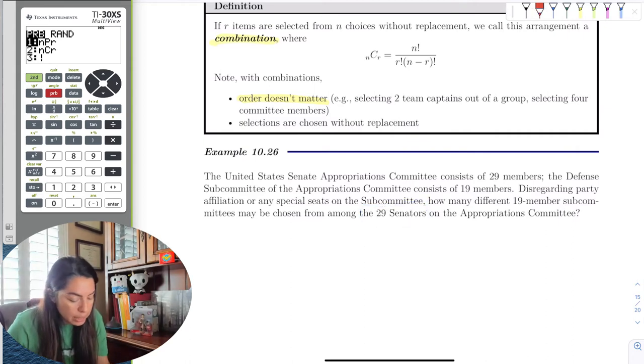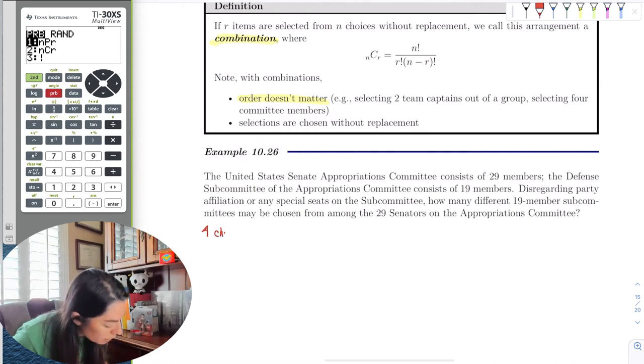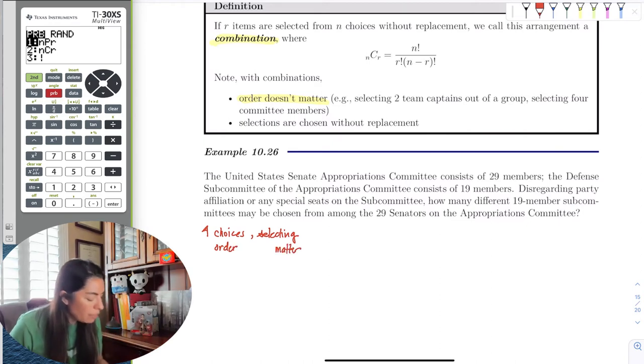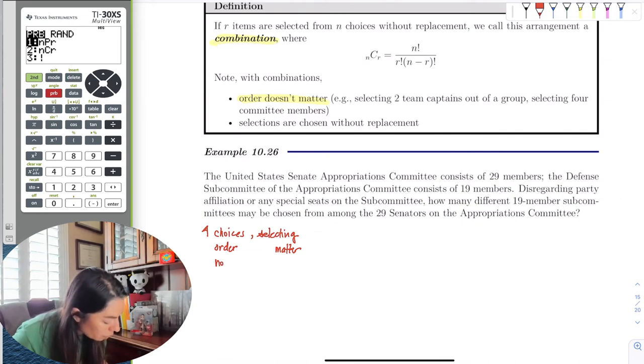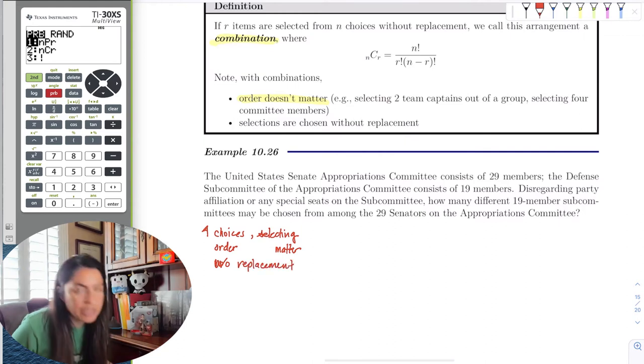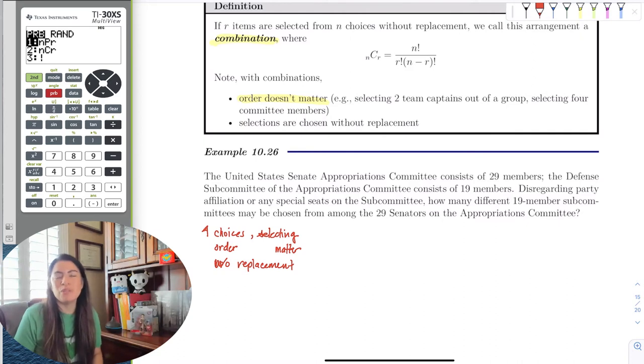So the real question is, I have choices and I'm selecting, right? And also does order matter? And there's no, or I should say without replacement. You can't pick two people for one thing and count as two members, right? It's just one person, one member. So it's without replacement. But does order matter in a committee? I just need 19 people to sit in a room. No, right? So order doesn't matter.